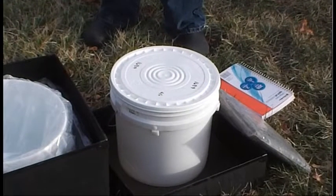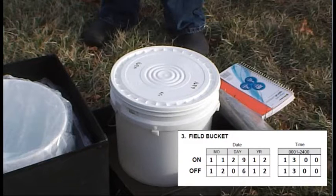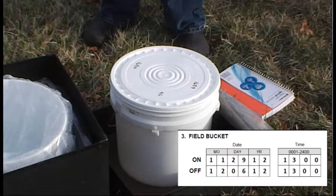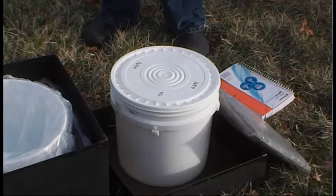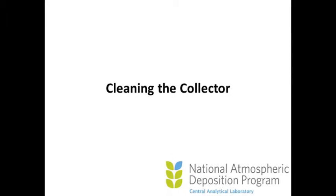Once your sample is secure, write down information needed to complete Block 3, Field Bucket, on the field form from the previous week. Include the off date and time for the sample bucket that you just collected. Note that time is expressed using a 24-hour clock.